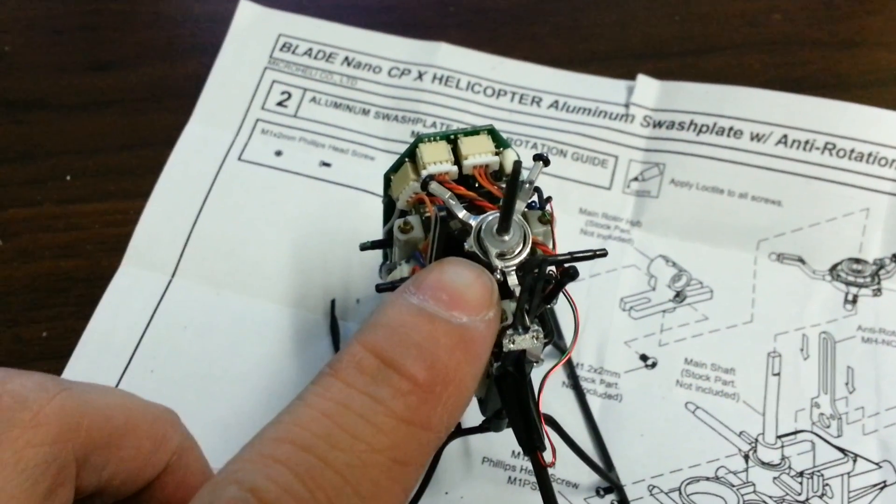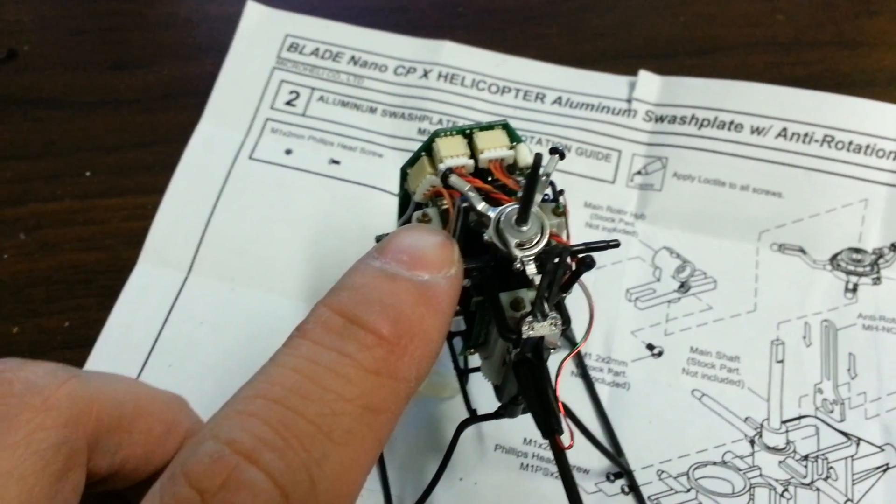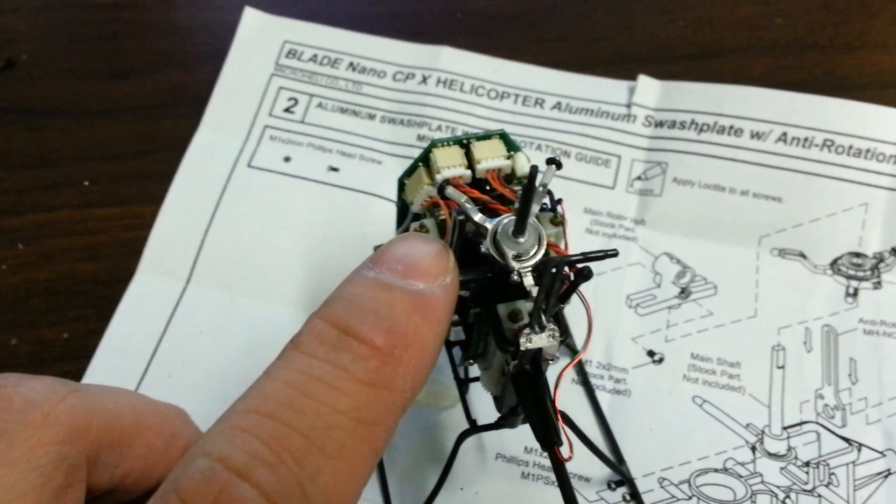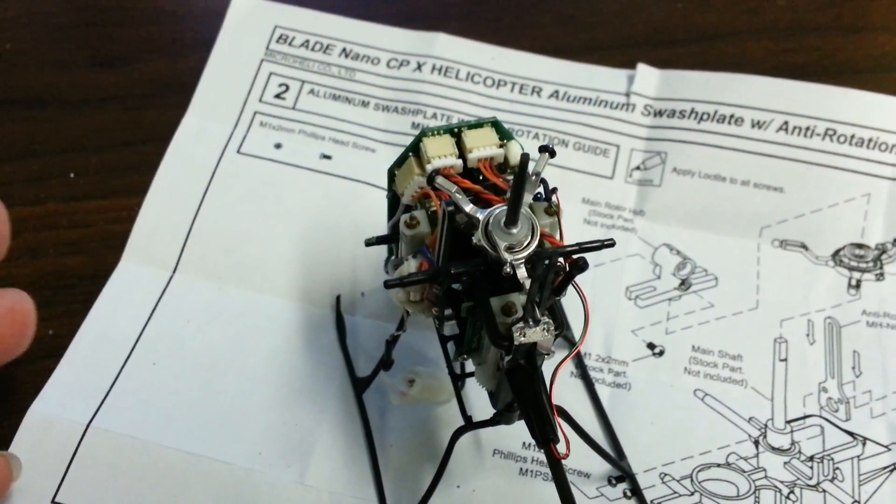So even if I want to use a pin on my swash plate to use the stock anti-rotation bracket, I can't because micro heli does not include a pin. Now I'm stuck with this thing.